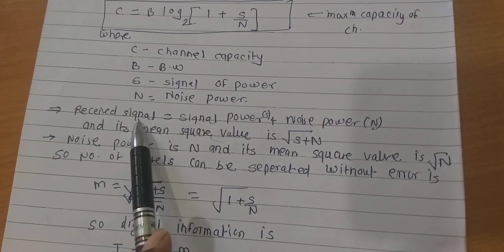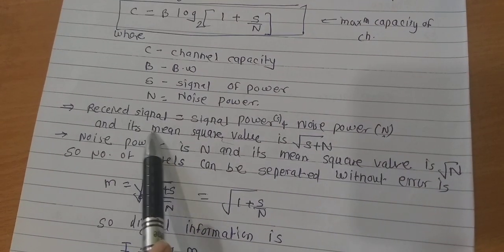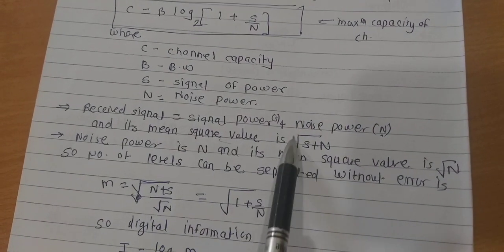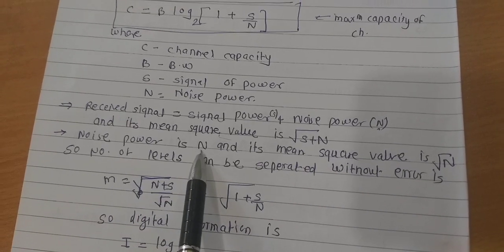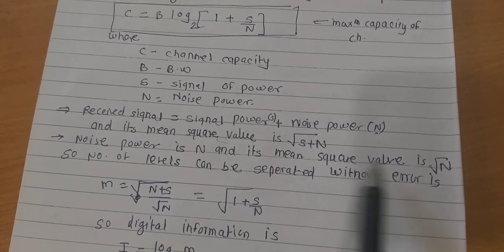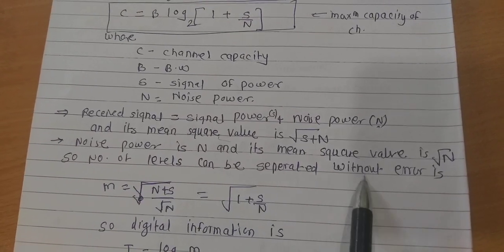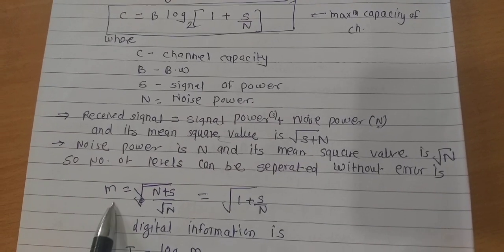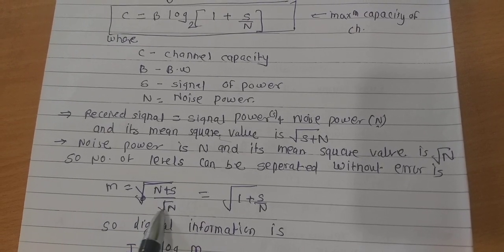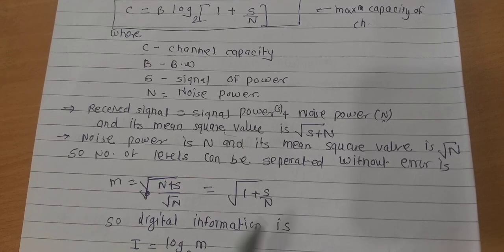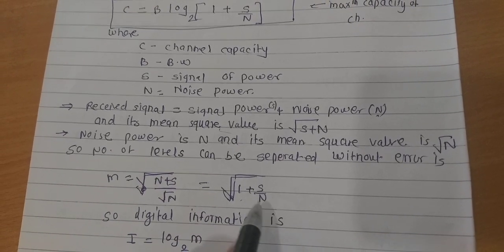The received signal is the signal power S plus the noise power, so its mean square value will be √(S + N). The noise power is N and its mean square value is √N. So the number of levels that can be separated without error is M = √(S + N) / √N = √(1 + S/N).